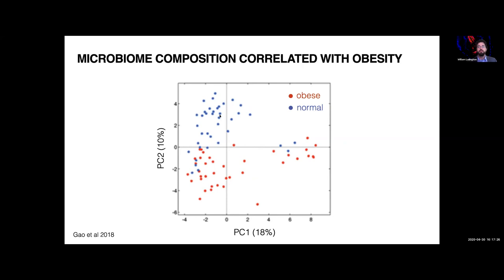If two dots are closer together, their microbiome signature is more similar. If you had a signature landing in one cluster, we'd guess normal physiology; in another, obese physiology. But this is a correlation — we don't know the microbes are actually causing the physiology. It could just be due to diet. Maybe these people just eat an unhealthy diet and aren't getting obese because they're burning it off. We want to know if these microbiomes are actually causative of the physiologies we observe associated with them.